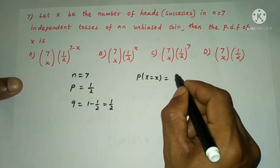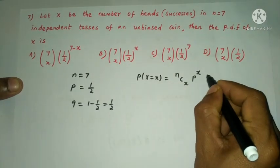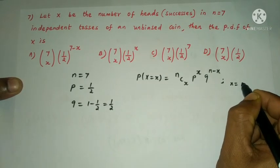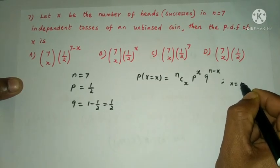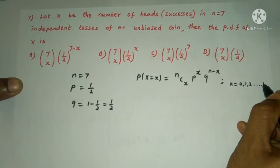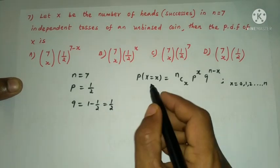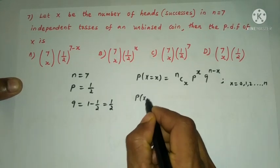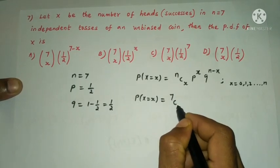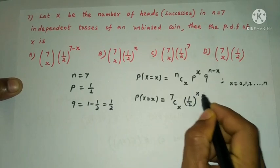The binomial distribution formula is P(X = x) = nCx × p^x × q^(n−x), where x = 0, 1, 2, ..., n. Here p = 1/2 and q = 1/2, so P(X = x) = 7Cx × (1/2)^x × (1/2)^(7−x).